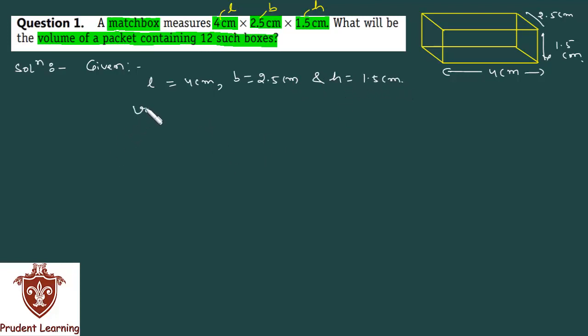Now, volume of 1 matchbox - the matchbox is cuboidal, so the volume formula is L × B × H. Substitute the values: length is 4, breadth is 2.5, height is 1.5. The calculation is easy.